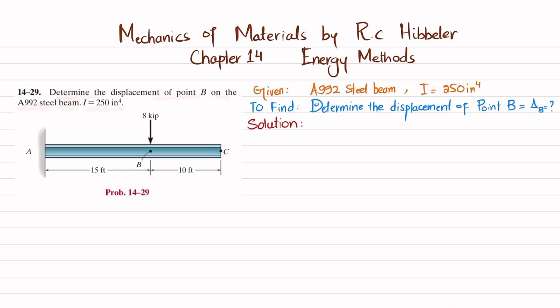You can see this is a cantilever beam having a point load at point B which is 8 kips. The total length is 25 feet.